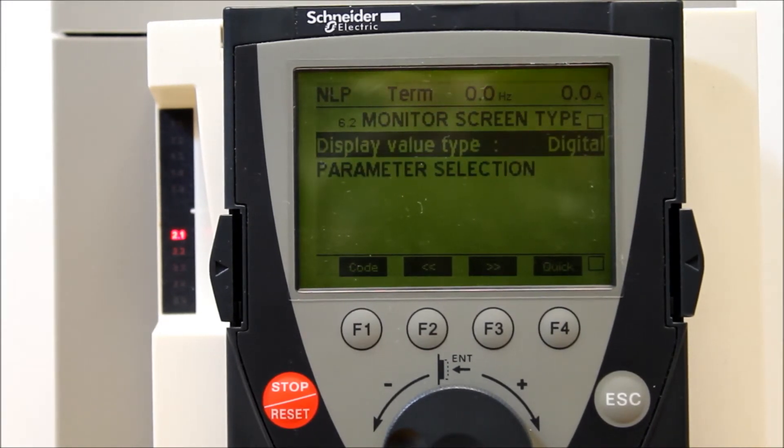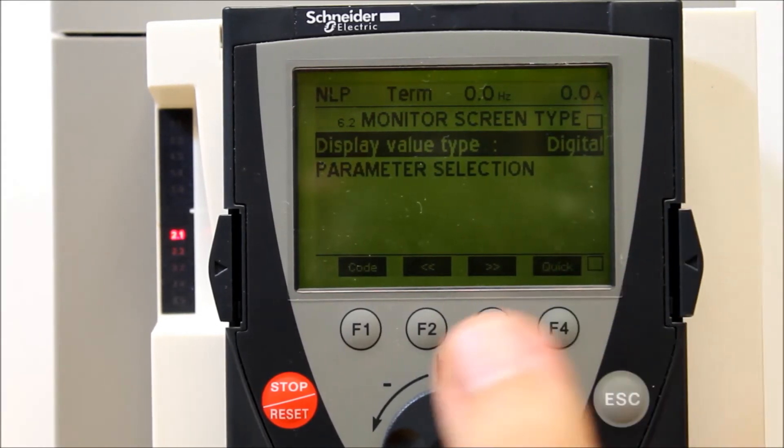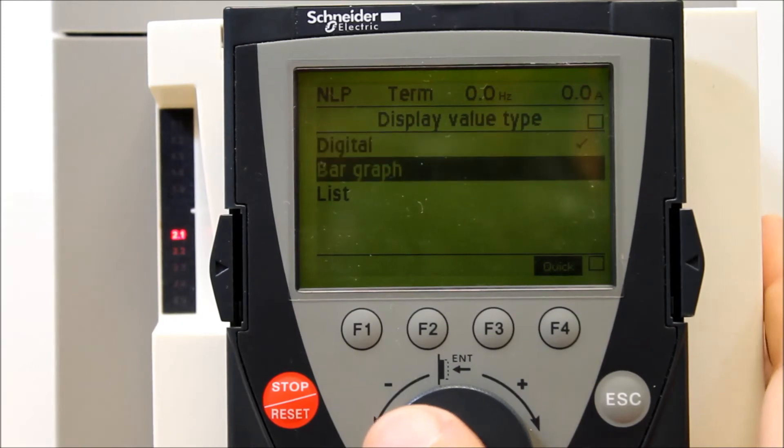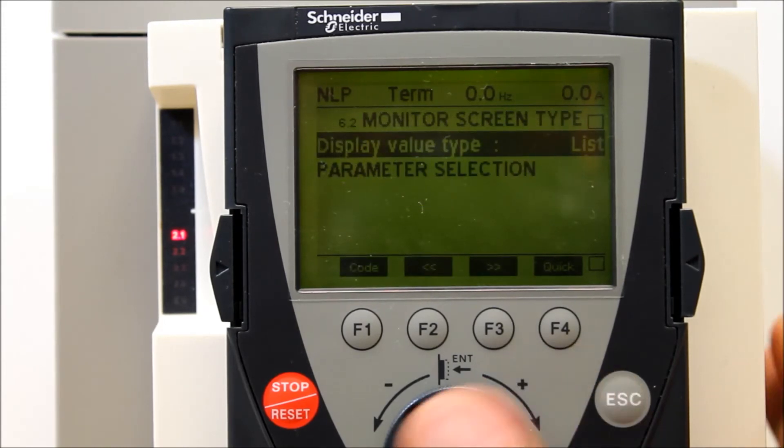And you can choose to have different display types. Digital is what you were programmed from default, but you can choose to have a bar graph if you want to see bar. But let's just go ahead and use list now. And this is the one that gives you five different options. Let's go ahead and use list.